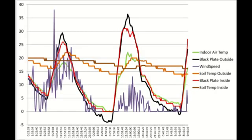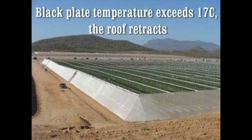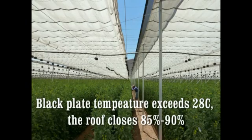Looking at the temperature chart from February 3rd and 4th, 2011 from Culiacan, Mexico, on the second day the black plate temperature outside increased rapidly from a low of minus 4°C, reaching a high of 37°C, whereas the air temperature only reached a high of 23°C. When the black plate temperature drops below 15°C, the roof closes to trap heat. When it exceeds 17°C, the roof retracts, exposing plants to direct sunlight. And when the black plate temperature exceeds 28°C, the roof closes 85% to 90% to prevent exposure to excessive heat.